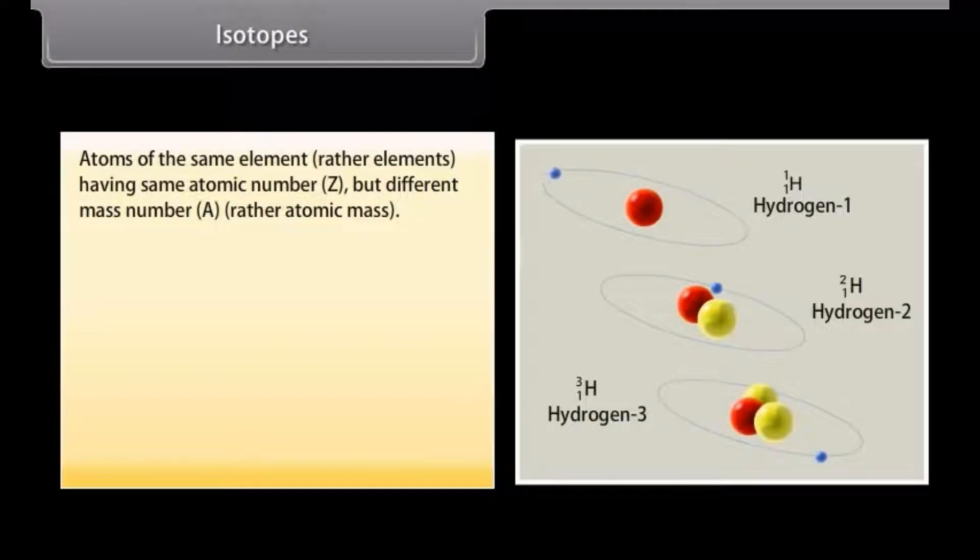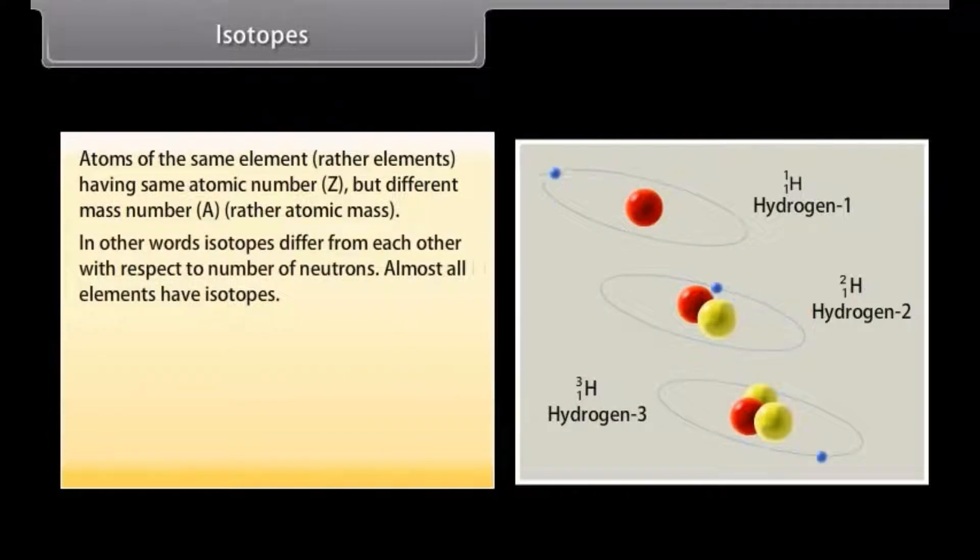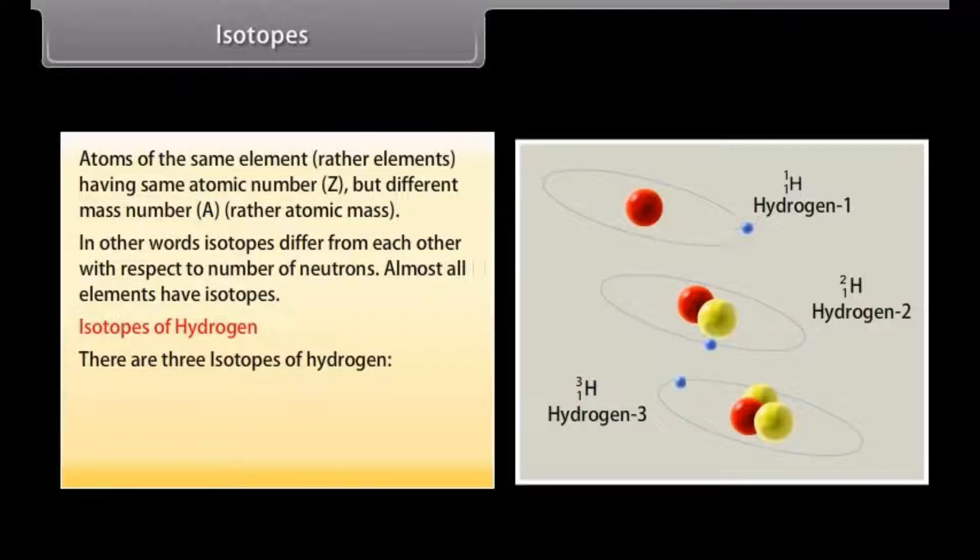Such atoms of an element are known as isotopes. Atoms of the same element, rather elements, having same atomic number Z, but different mass number A, rather atomic mass. In other words, isotopes differ from each other with respect to number of neutrons. Almost all elements have isotopes. Isotopes of hydrogen: There are three isotopes of hydrogen.